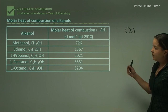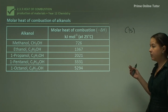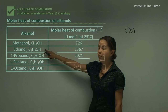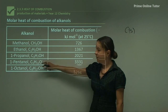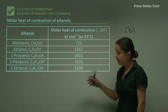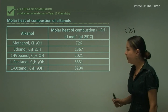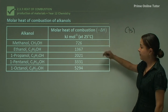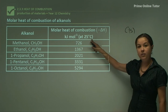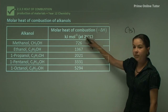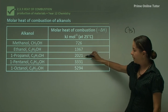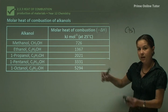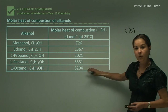Let's look at some typical values for the molar heat of combustion of alkanols. The table shows increasing chain lengths going down: methanol, ethanol, 1-propanol, propanol, pentanol, octanol. The molar heats of combustion are shown as negative delta H in kilojoules per mole at 25°C. These values would change at different temperatures. Clearly, the smaller the chain of the alkanol, the lower the molar heat of combustion — it increases as the chain length increases.